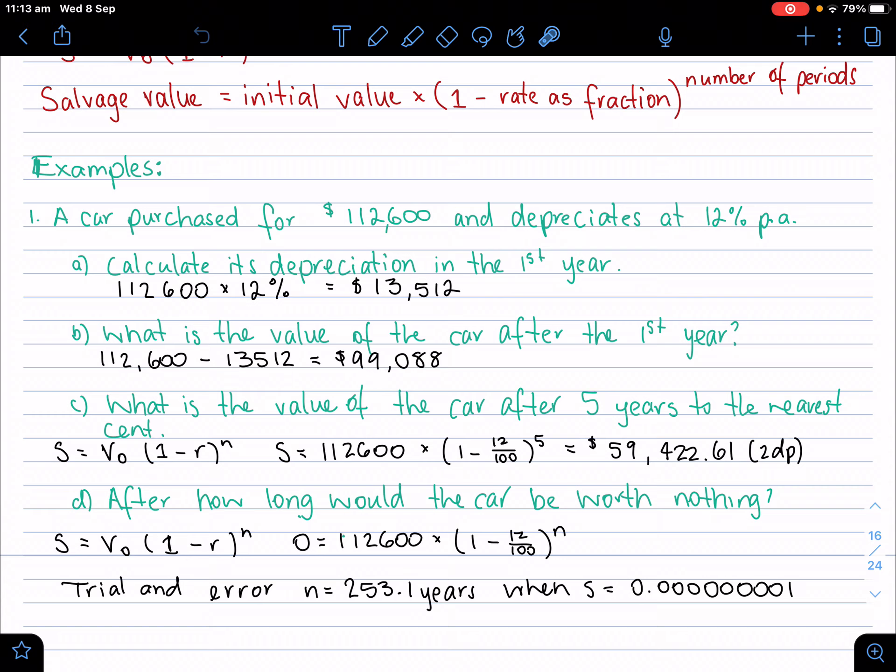But when questions get a bit trickier, like C, what is the value of the car after five years to the nearest cent? We're going to have to use the formula. Where the salvage value equals the initial value, 112,600 times 1 minus the rate as a fraction, so 12% over 100, to the power of the number of periods, five years in this case. And we get our salvage value after five years is $59,422.61.